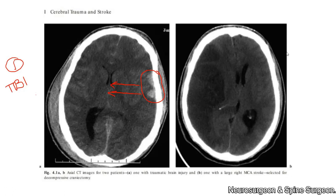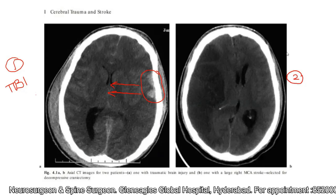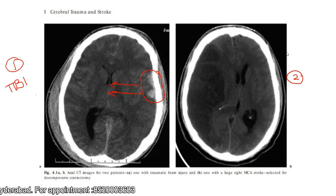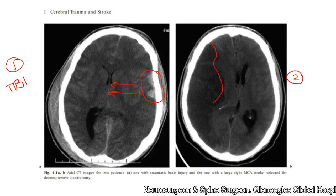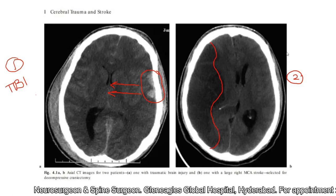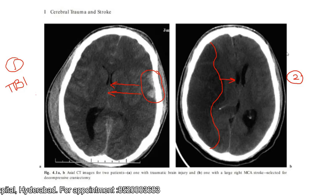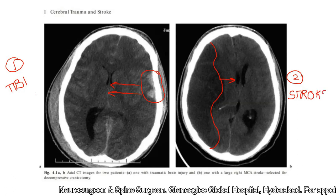The second classical indication is a stroke — it may be a hemorrhagic infarct or an ischemic stroke. Here you can see a right-sided stroke, a well-defined infarct in the right-sided territory causing a midline shift to the opposite side by more than 5 mm. So these are the two classical indications: traumatic brain injury and stroke, either ischemic or hemorrhagic.